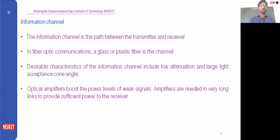After the coupler we deal with the information channel. The channel is the path through which your signal travels from transmitter to receiver. In fiber optic communications, a glass or a plastic fiber is the channel — we use it to transmit light waves from transmitter to receiver. Desirable characteristics of the information channel include low attenuation and a large light acceptance cone, meaning your channel should have good aperture and accept whatever light is coming in, with very low attenuation to avoid losing information.